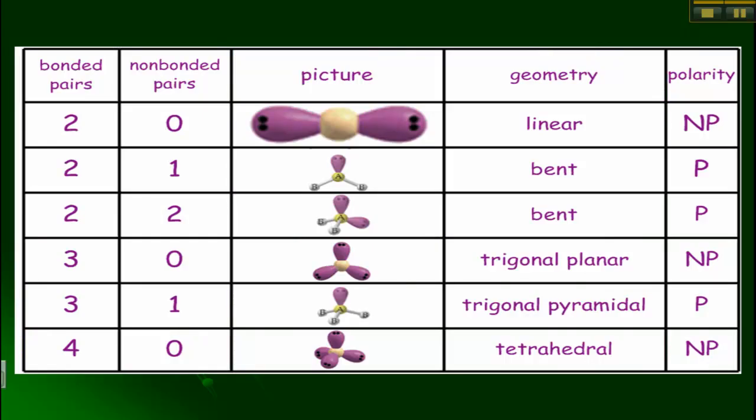So here's the chart again that we did in class. You'll notice that all of our non-polar molecules have zero non-bonded electron pairs. The polar molecules do have non-bonded electron pairs.